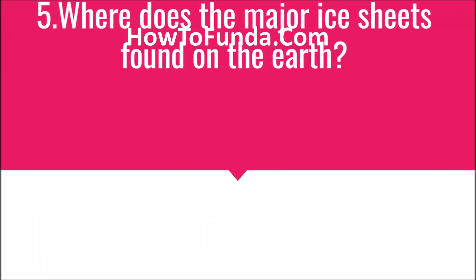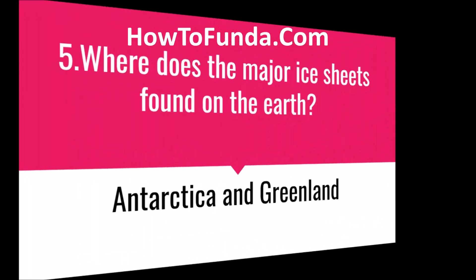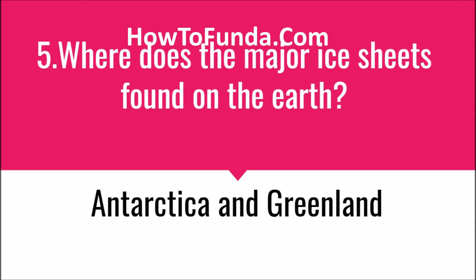Where are the major ice sheets found on the earth? The major ice sheets are found in two places: Antarctica and Greenland. These are the two places where you can find the major ice sheets.